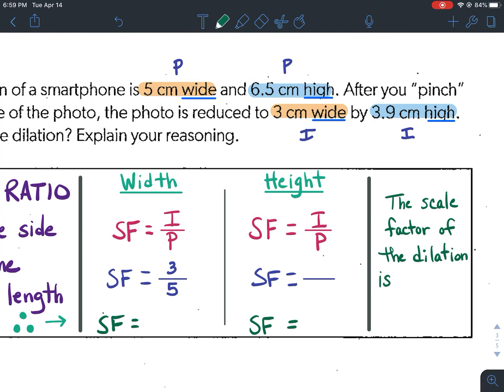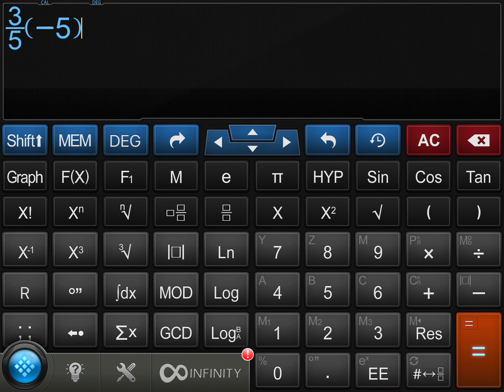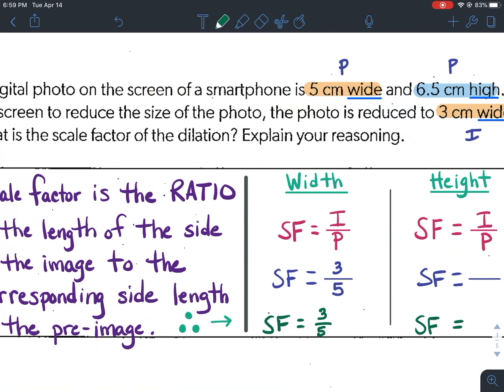Well, 3 fifths, if you put that in our calculator, it would stay 3 fifths. But also, 3 over 5 is 0.6. So it looks like our scale factor is 3 fifths or 0.6.